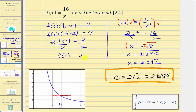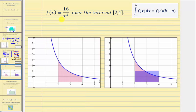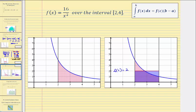Let's look at this graphically. Because the function was non-negative over the given interval, the value of the definite integral was this area under the function above the x-axis. When we found f of c equals two, that gave us the height of the rectangle shown here, where a rectangle with this height over the given interval has the same area as the area under the function. Then when we found the value of c, we found this x value that gave us the function value of two.